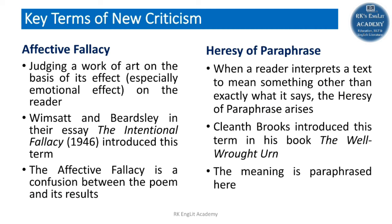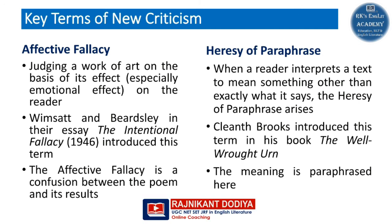To summarize: the three important key terms in New Criticism are intentional fallacy, affective fallacy, and heresy of paraphrase. The first two were coined by W.K. Wimsett and Beardsley in their 1946 essay, while heresy of paraphrase was coined by Cleanth Brooks in 'The Well Wrought Urn'. The term 'New Criticism' itself was coined by John Crowe Ransom in his book published in 1941. The major theorists are I.A. Richards, William Empson, and T.S. Eliot.